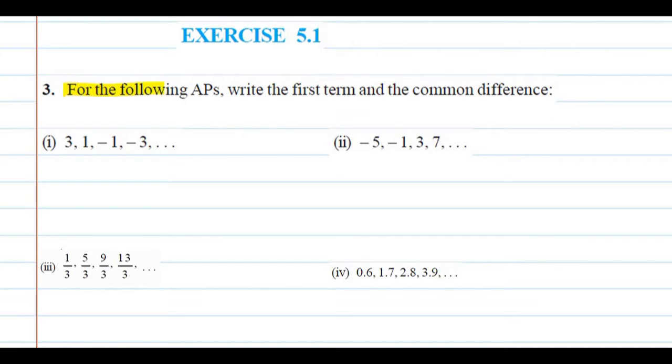For the following APs, write the first term and the common difference. So students, you can see that there are total 4 parts in this question. And we have told that in APs, the 4 APs, we have to show the first term and show the common difference.